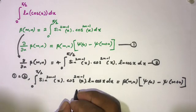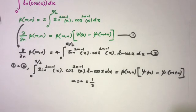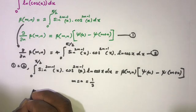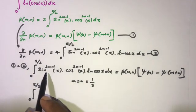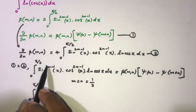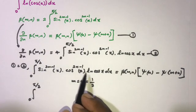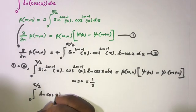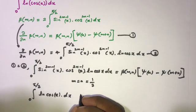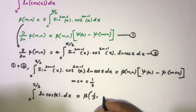To get our integral from 0 to π/2 of natural log of cos x, we plug in m = n = 1/2. The sine power becomes 2(1/2)−1 = 0, so sine to the 0 equals 1, and likewise cosine to the 0 equals 1. So the left side simplifies to the integral from 0 to π/2 of natural log of cosine of x dx.